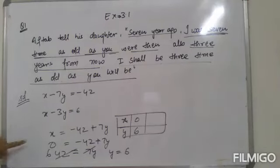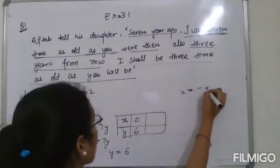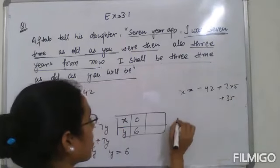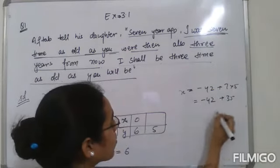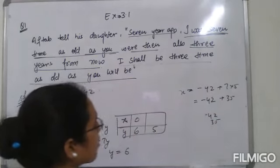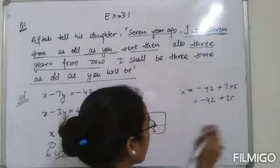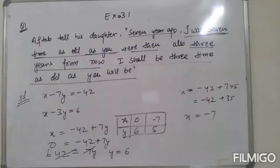For a second point, let y equals 5: x equals negative 42 plus 7 times 5, which is negative 42 plus 35, giving x equals negative 7. So the second point is (negative 7, 5). Now let's plot these points on the graph.